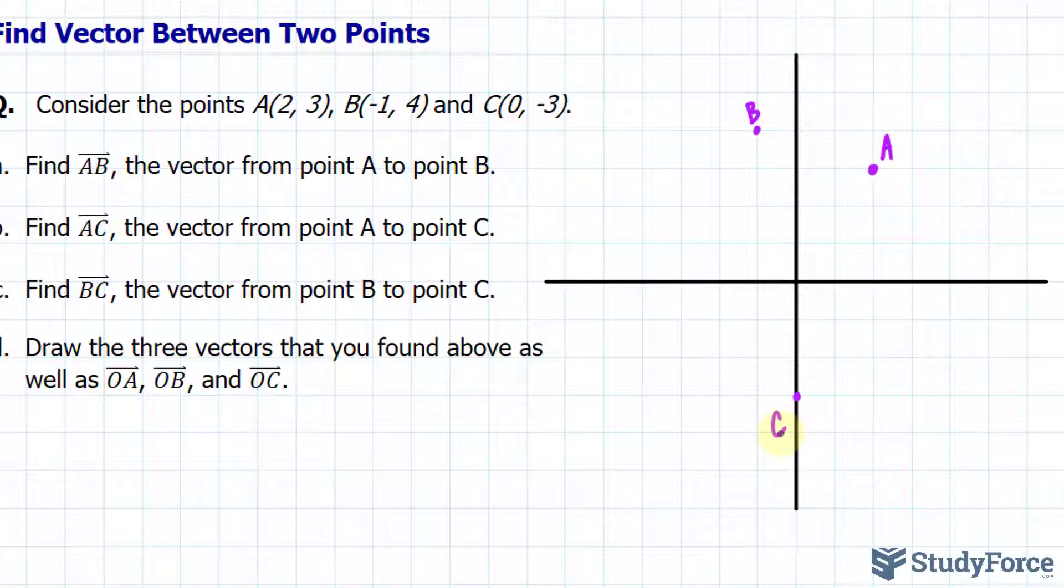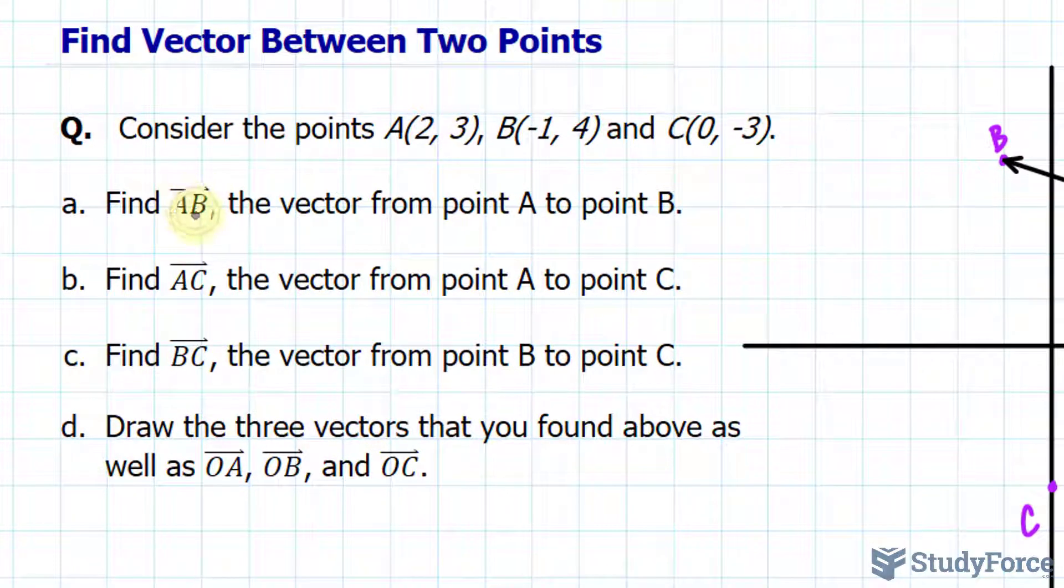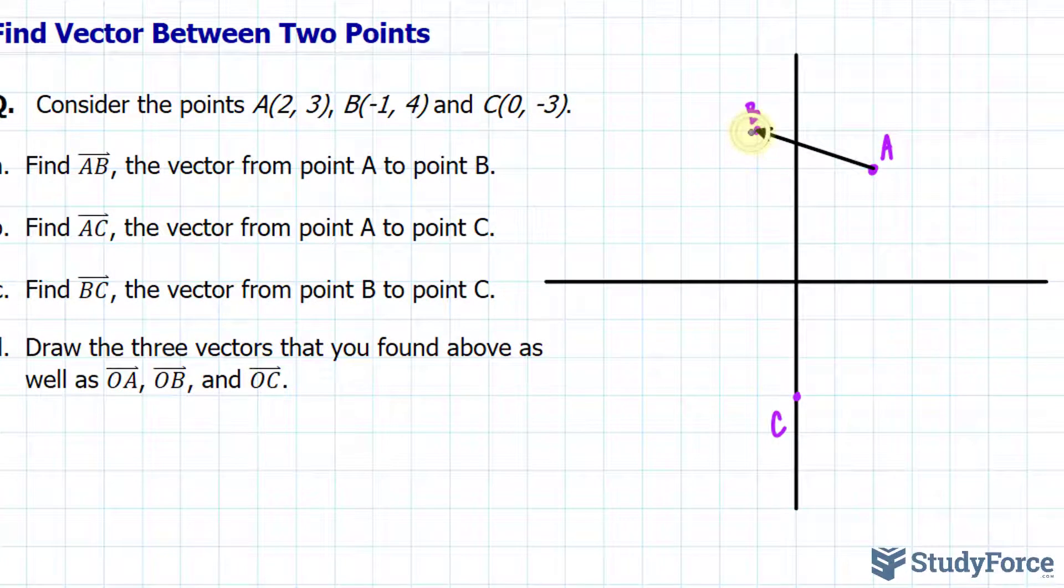So they want the vector that spans from A over to B. The order in which this is written is important, because the way that this is written tells us that we start at A and end at B. So to find the components of the vector that represents this arrow, and we'll call that vector AB.